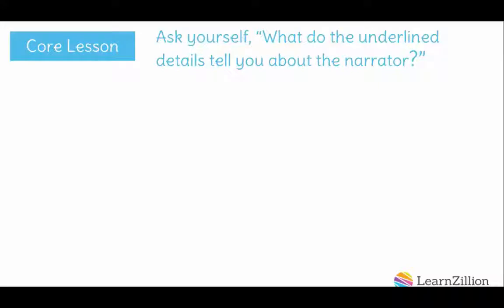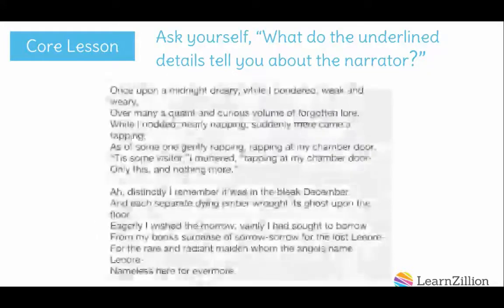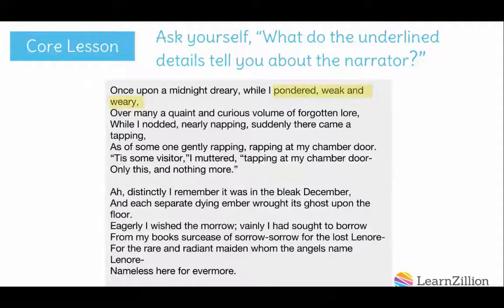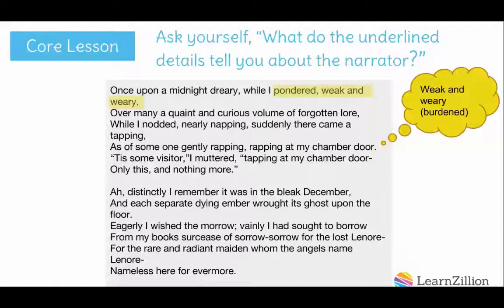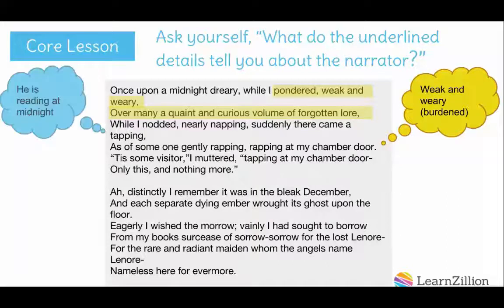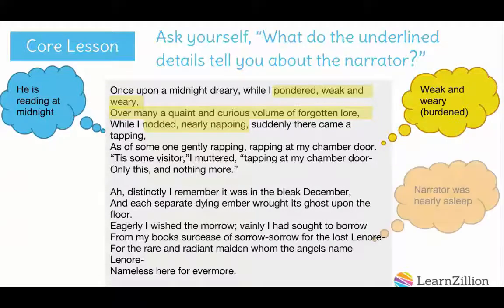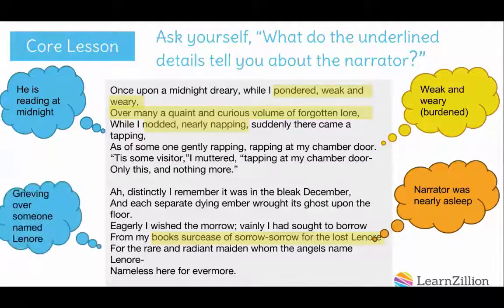Now that we've underlined all of the words that describe the narrator and the setting, ask yourself: what do the underlined details tell you about the narrator? We know from 'pondered, weak, and weary' that the narrator was weak and weary at midnight. He was also thinking, hence the word pondered. He is reading at midnight while weak and weary — 'over a quaint and curious volume of forgotten lore.' He was also nearly asleep, hence 'nodded, nearly napping.' Lastly, he is grieving over someone named Lenore.